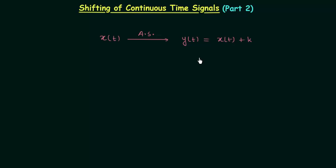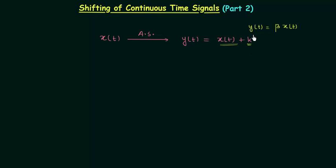In amplitude scaling we multiplied beta to the original signal xt, but here in amplitude shifting we are adding k to the original signal. In case of amplitude scaling the original waveform will change, but in case of amplitude shifting the original waveform will remain the same.